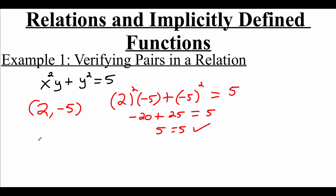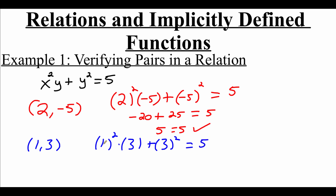Now we're going to test another ordered pair: (1, 3). We're going to take our x and our y value and plug them in. So we're going to get 1 squared times 3 plus 3 squared, and we're checking to see if that's equal to 5. So 1 squared is 1, and 1 times 3 is 3. If we square this 3 we get 9. So we get 3 plus 9, and we're checking to see if that's equal to 5. Well 3 plus 9 is 12, and 12 is not equal to 5. So the ordered pair (1, 3) is not part of the relation.